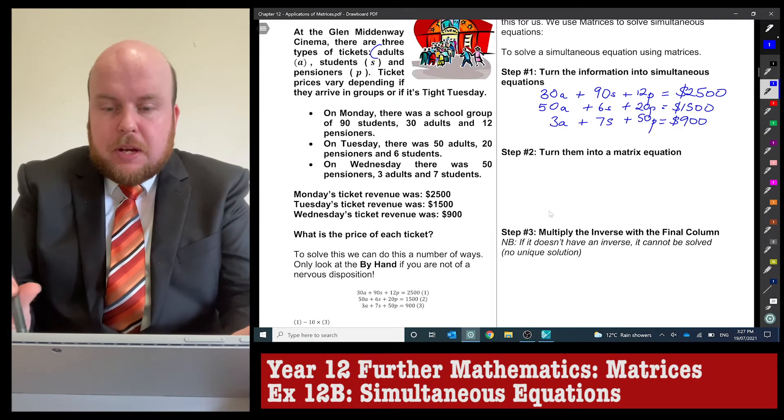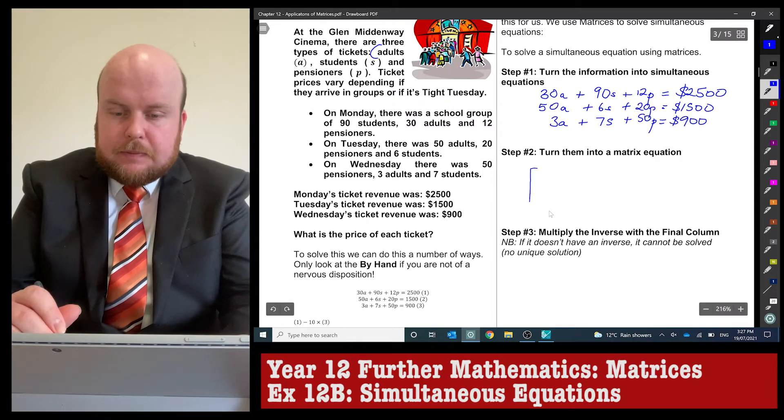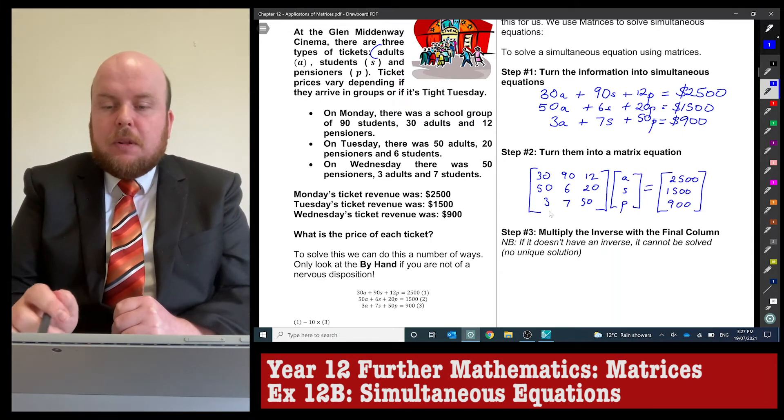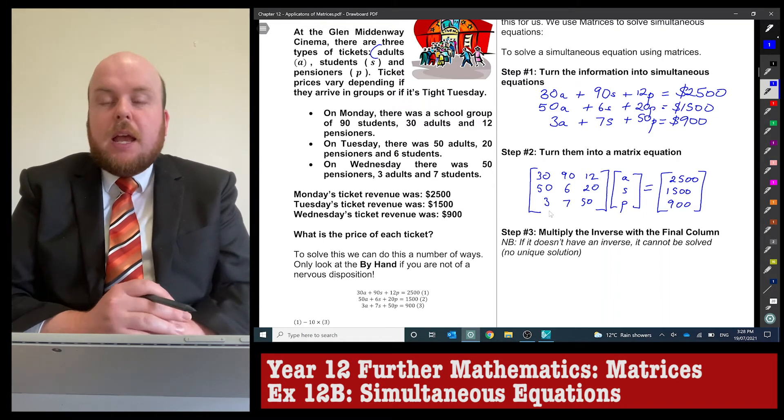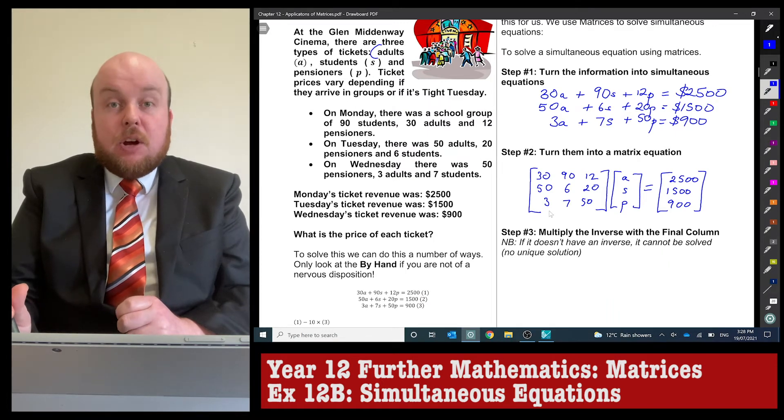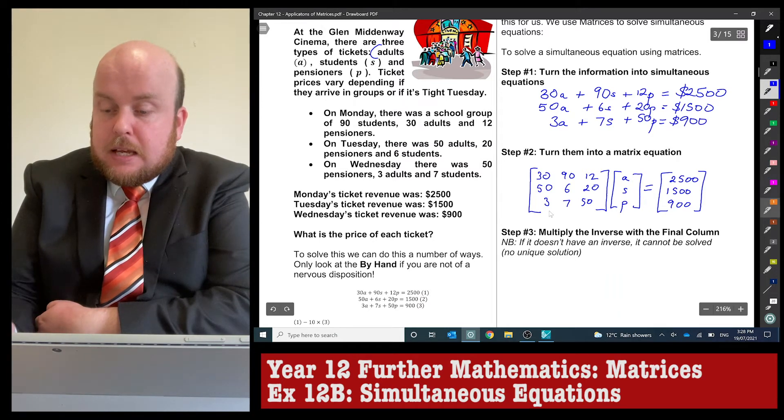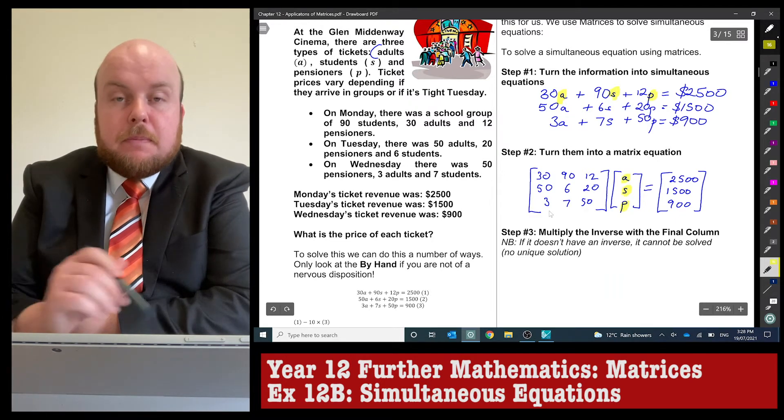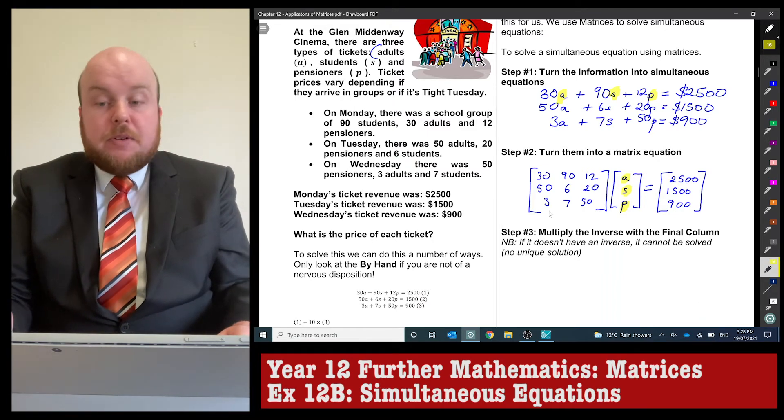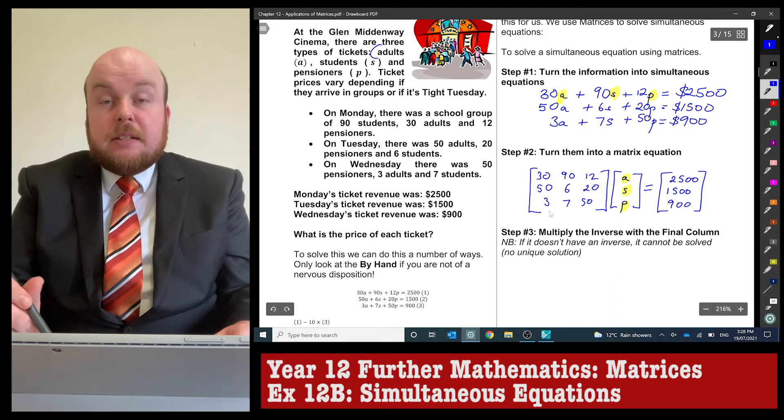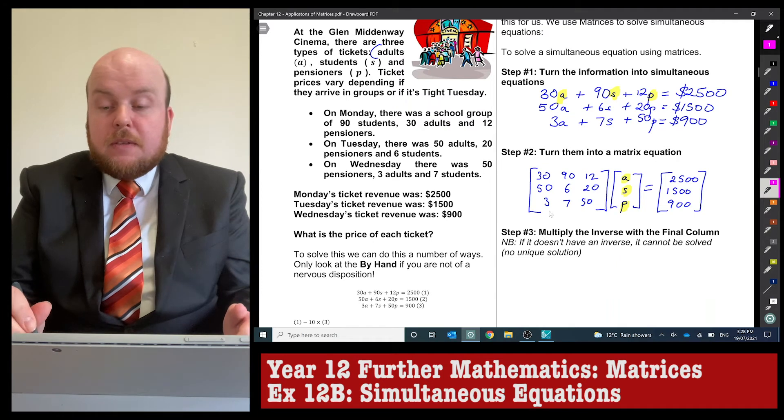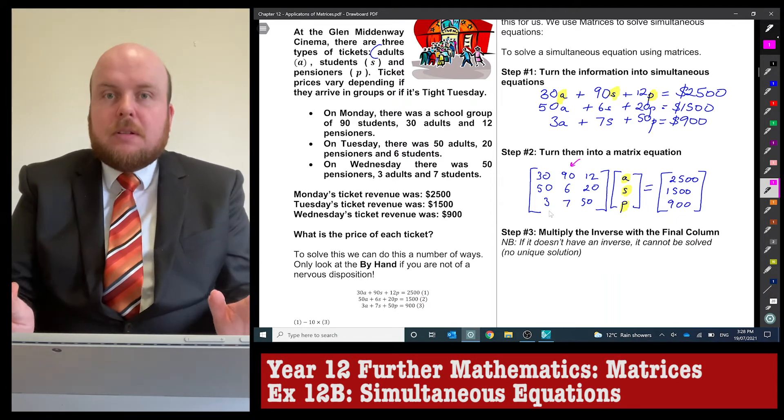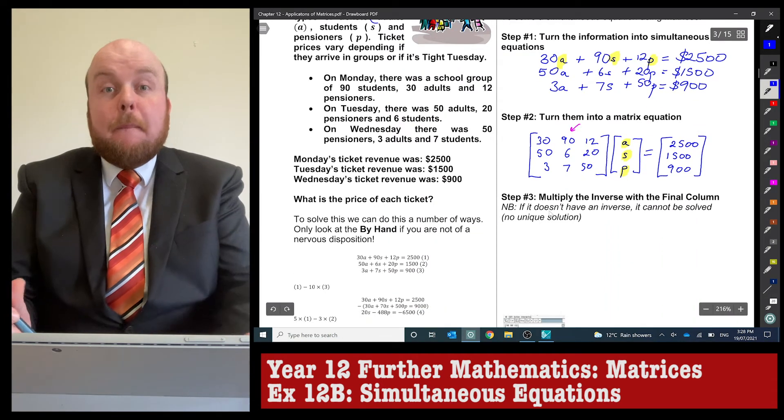Once we've got our established equation, we'll write it as a matrix equation. I've put all the numbers into one square matrix, and then the letters A, S, P one after the other in a column matrix. It's important that the letters from left to right are the same as going from top to bottom in this column. The final matrix is all our totals. In an ideal world, we'd divide both sides by this 30, 90, 12 matrix. But we cannot divide matrices, so we multiply by the inverse.